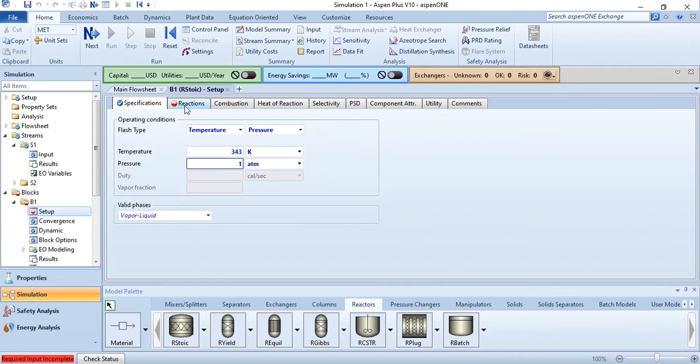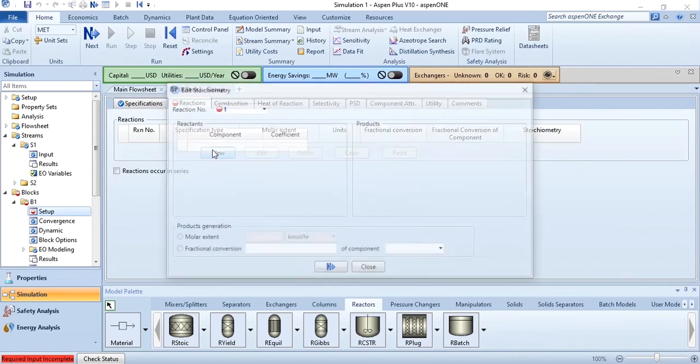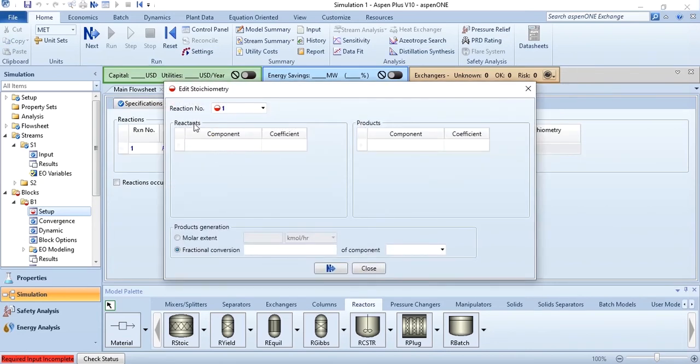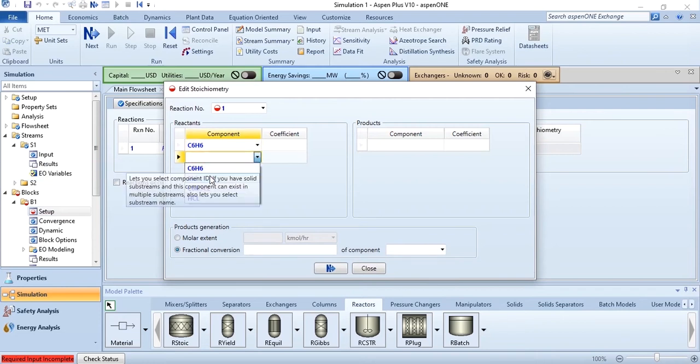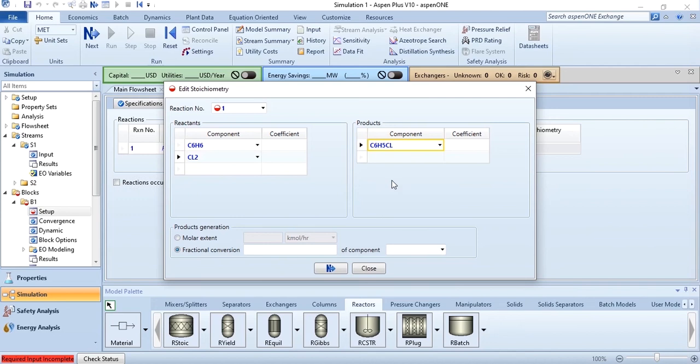In the specifications in reactions, click on this new, and in new obviously you have to specify reactants and products. In reactants, click on C6H6 which is benzene, Cl2 which is your reactant, C6H5Cl product, HCl product.